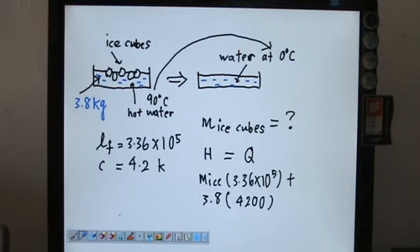The information given is the specific latent heat of fusion, 3.36 times 10 power 5, and the specific heat capacity of water, 4.2 kJ per Celsius per kg. And the question is how many ice cubes needed, the mass of the ice cubes.